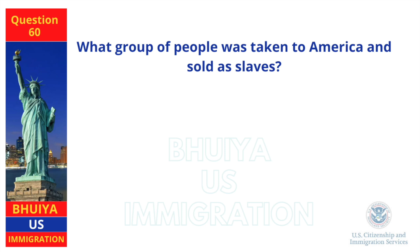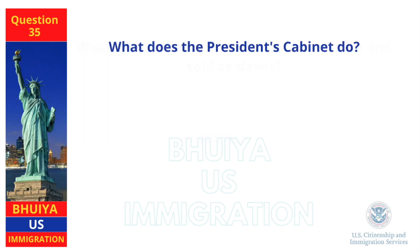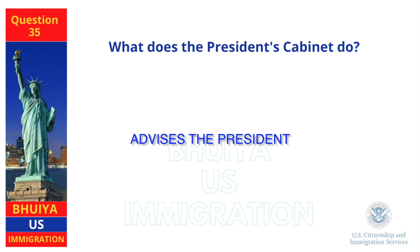What group of people was taken to America and sold as slaves? Africans. What does the president's cabinet do? Advises the president.